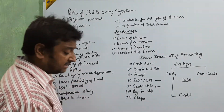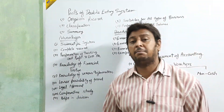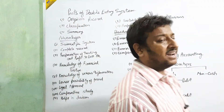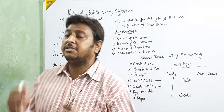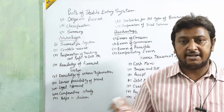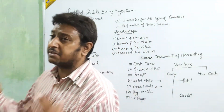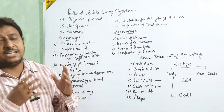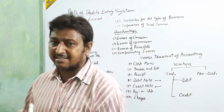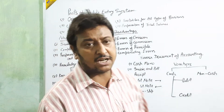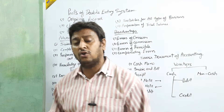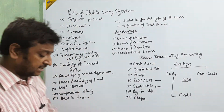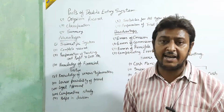Now we go to the advantages of the double entry system. The first advantage is that it is a scientific system. In this system we record both sides of every transaction, present all heads in a systematic way, following scientific rules and regulations and cause-and-effect relationships. So the double entry system is a scientific system.